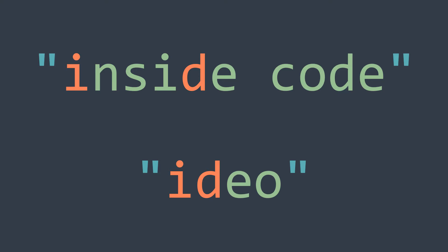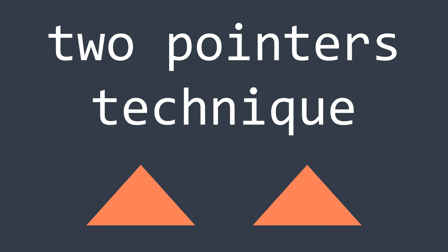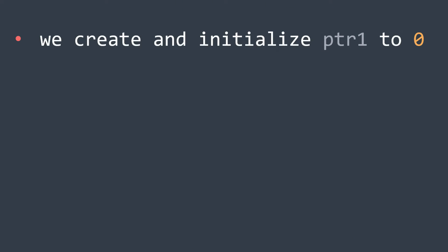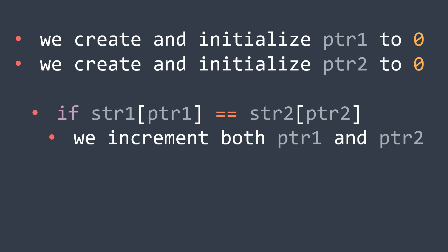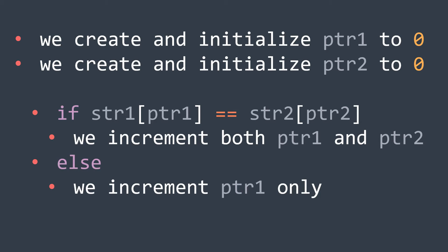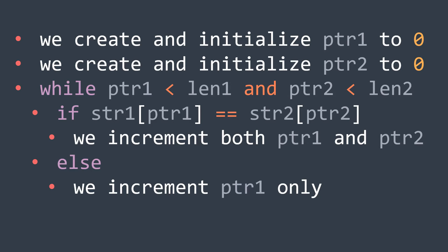But how can we implement this solution? We said that we are traversing str1 while keeping track of which character of str2 we are searching, and a very good way to do that is to use the two pointers technique. We put one pointer on the first character of str1, we can name it ptr1, and one on the first character of str2, we can name it ptr2. Then we compare str1 at ptr1 with str2 at ptr2 each time. If they are equal, we move both pointers to search for the next character of str2 and continue walking on str1. Else, we move ptr1 only to continue searching. All that while ptr1 is smaller than the length of str1 and ptr2 is smaller than the length of str2, because we don't want to go out of bounds.